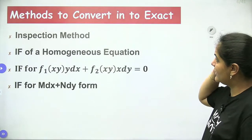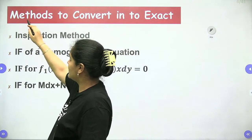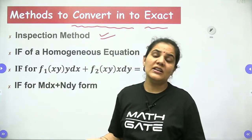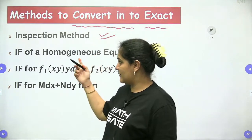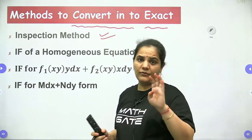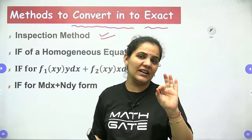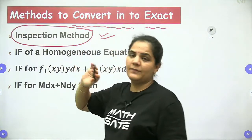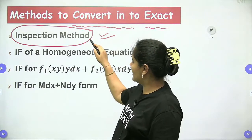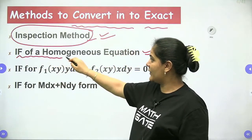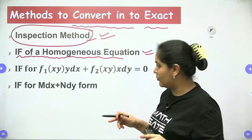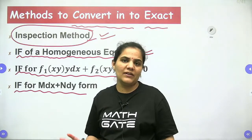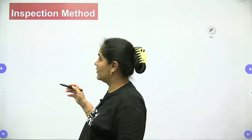There are four methods to find the integrating factor and convert a non-exact equation into an exact one. The first method is the inspection method. The second, third, and fourth involve finding an integrating factor — for a homogeneous equation, and for two other specific equation types. Only the inspection method requires no integrating factor.